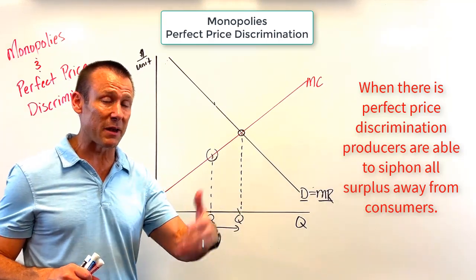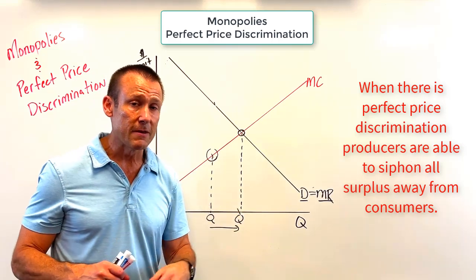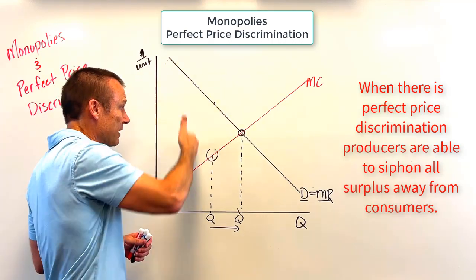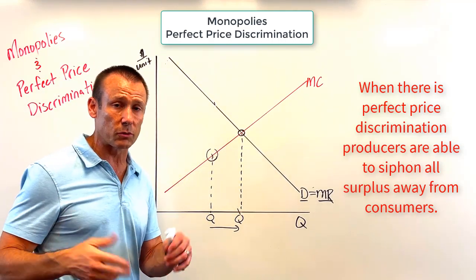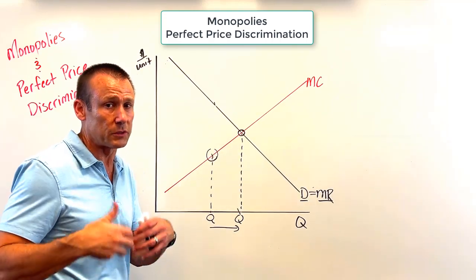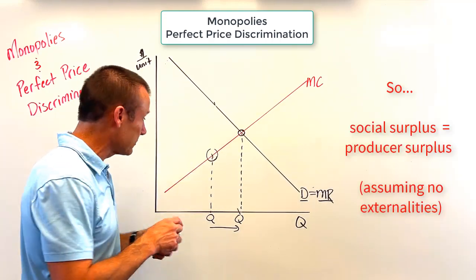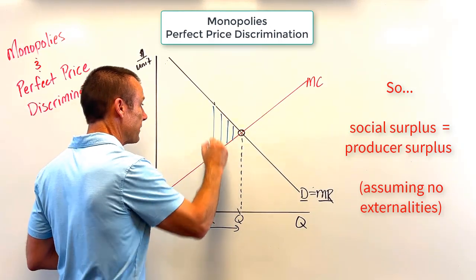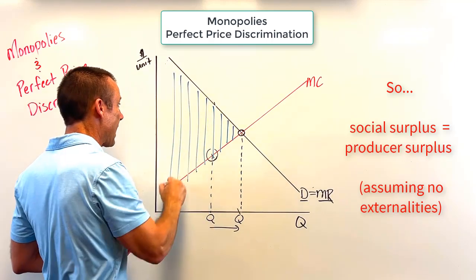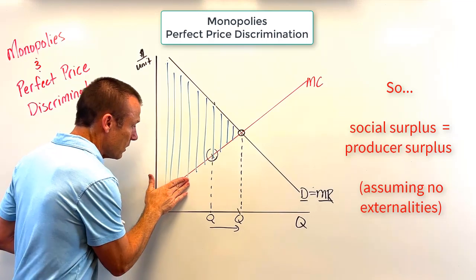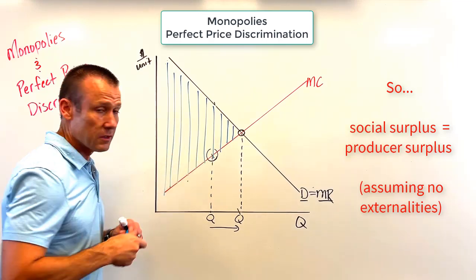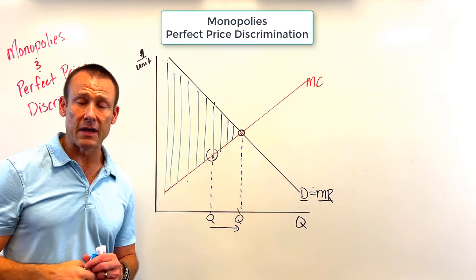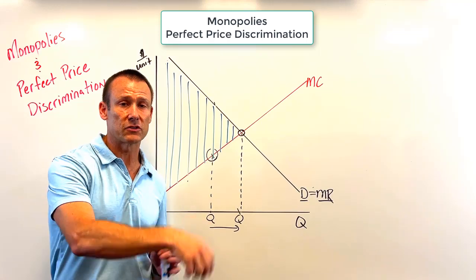With no price discrimination, that triangle would have been deadweight loss. With perfect price discrimination, output increases all the way to where MC equals MR — and there is no deadweight loss. However, consumer surplus equals zero, because consumers are charged a price equal to the benefit they put on the good.